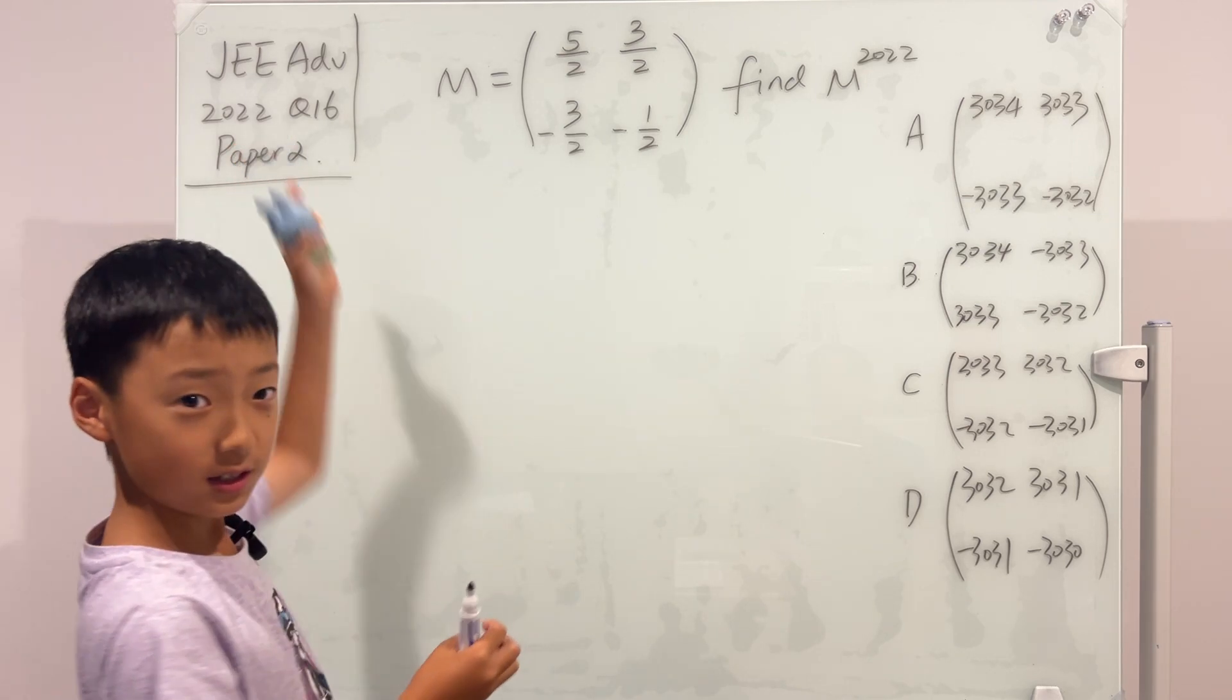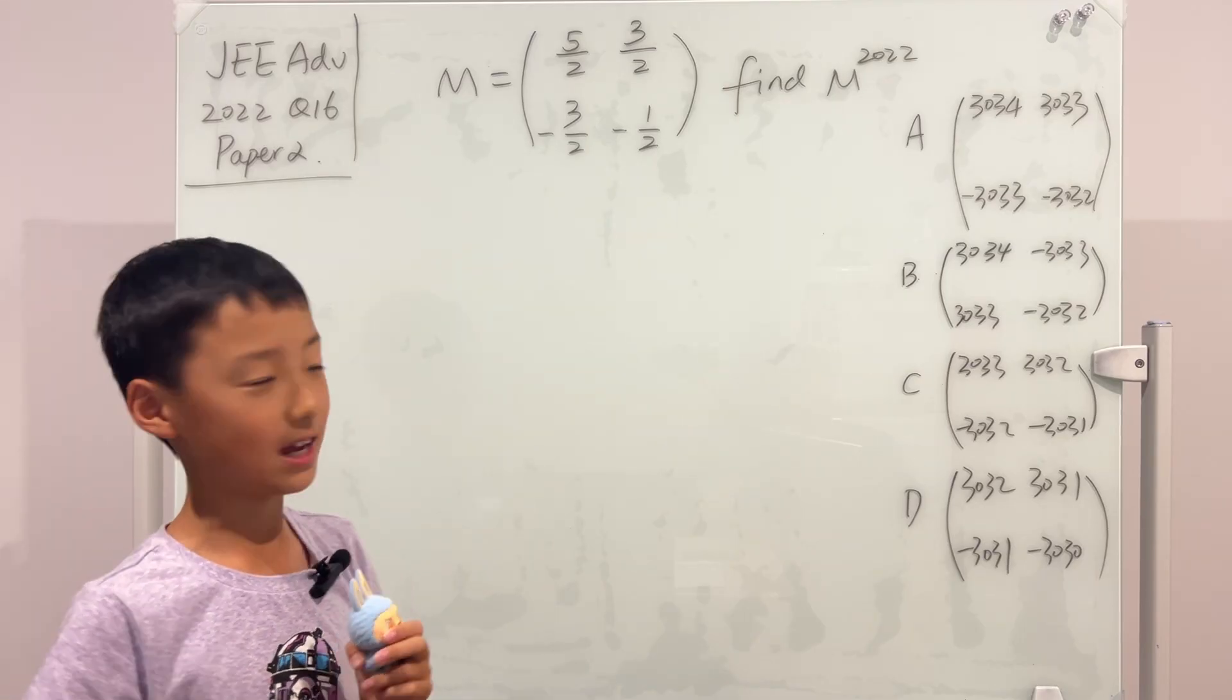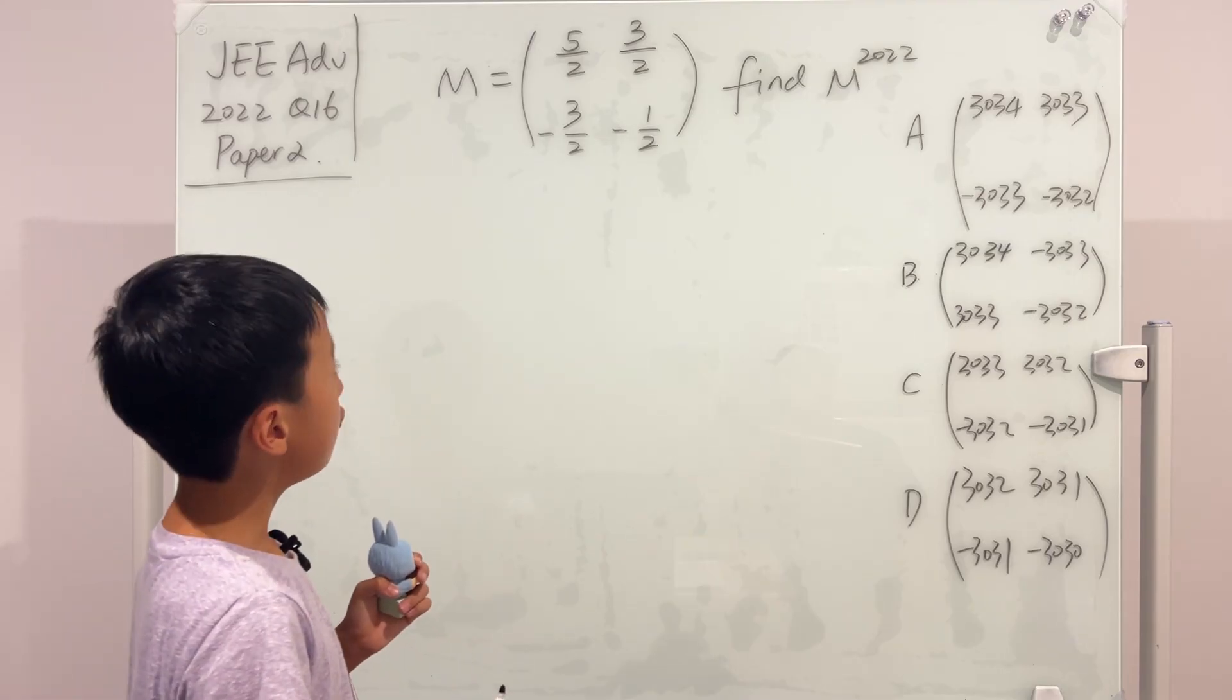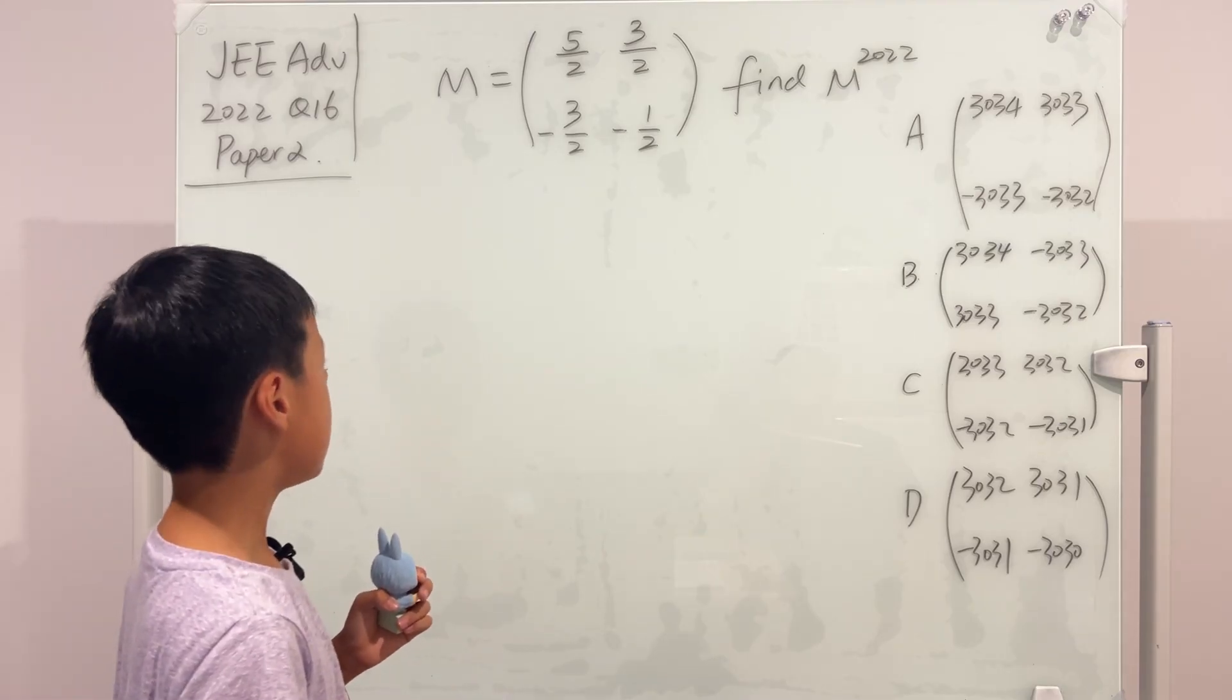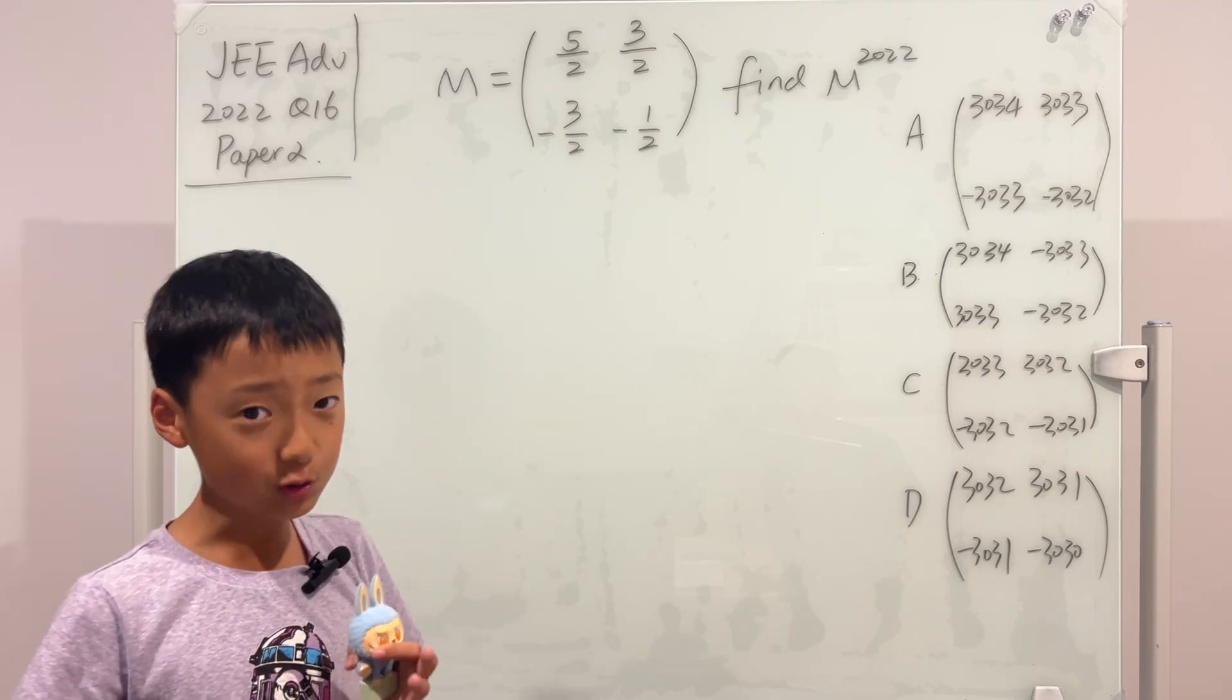Look, it was given to you in the year 2022. Nice. Okay, anyway, well, we can't really raise this matrix by 2022 by hand, can we? Because it's going to get too crazy.